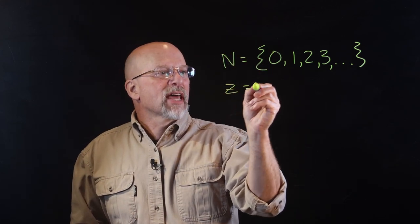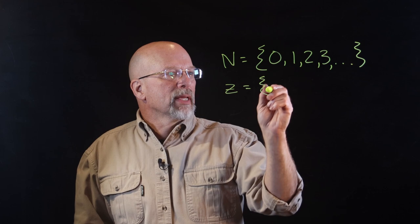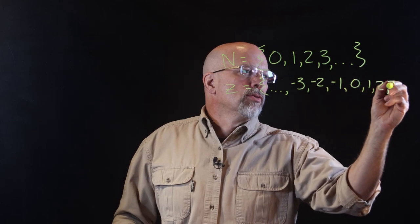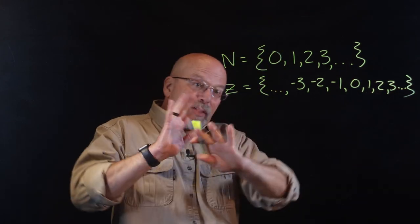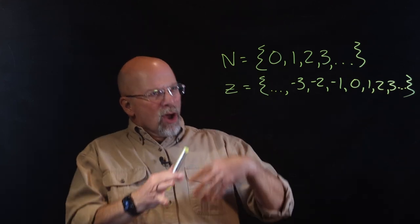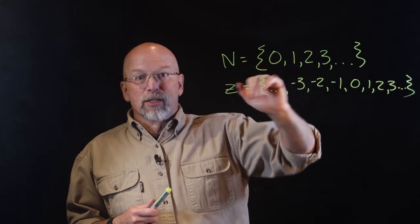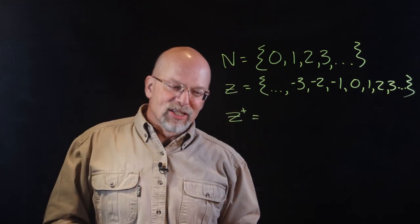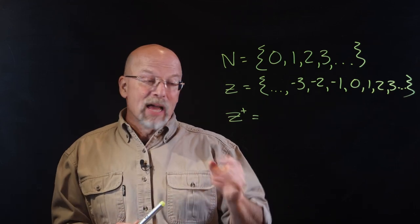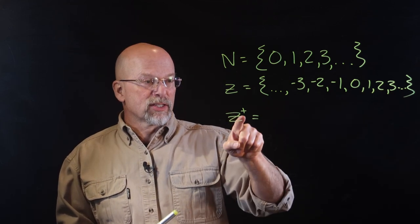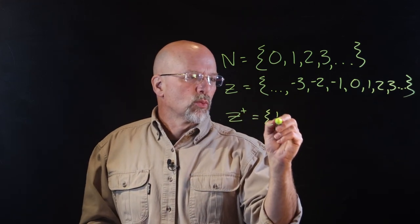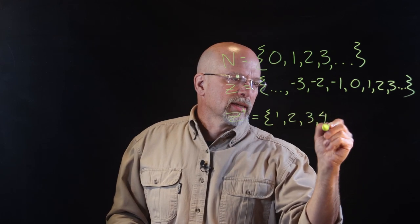You also have the set of integers: ... -3, -2, -1, 0, 1, 2, 3, ... the full set of integers. But sometimes we don't want natural integers because we don't want 0. We want just positive integers, which are sometimes shown with capital Z with a superscripted plus — so just 1, 2, 3, 4, and so on.